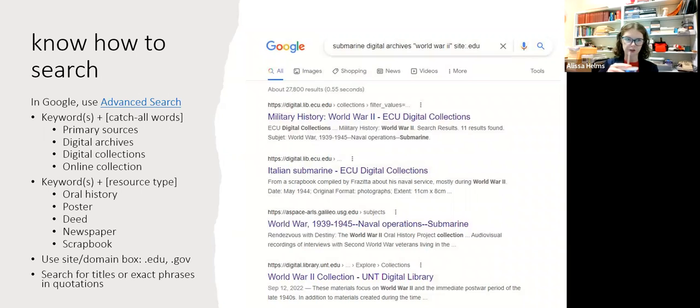So also in knowing how to search, Google can very much be your friend, especially Google Advanced Search. If you've never used it before or if you haven't used it in a while, you can put in domain names. So if you want to look for some of these things, .edu or .gov are going to be really good domains to search through since a lot of these collections are going to be from government facilities or from universities.